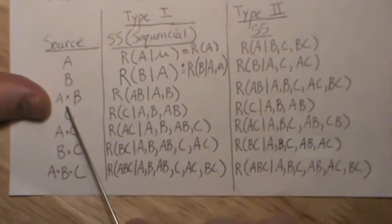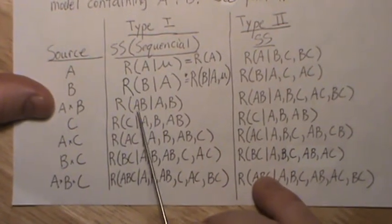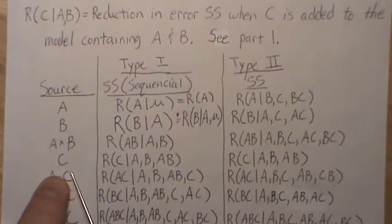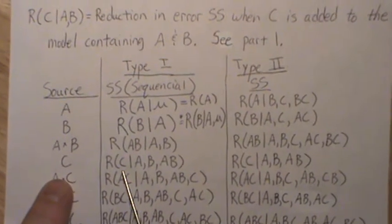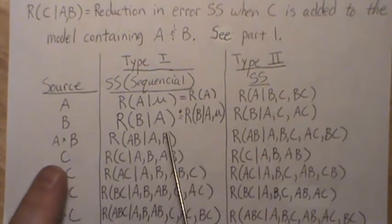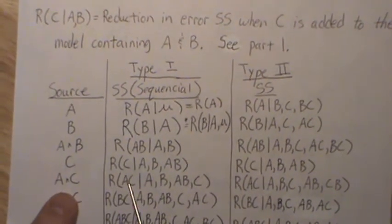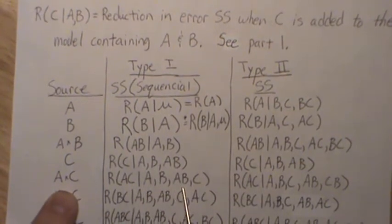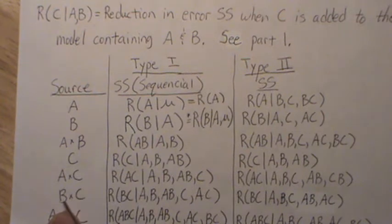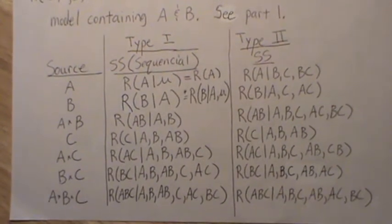The next term in the model is the interaction term. So in type 1 sums of squares, it's the reduction in the sum of squares when the AB interaction term is added to the model that already has A and B. Then the type 1 sum of squares for C is the reduction when C is added to the model containing A, B, and the AB interaction. We keep going: AC interaction given everything before it, BC interaction given everything before it, and similarly for the three-way interaction. That's type 1 sums of squares.